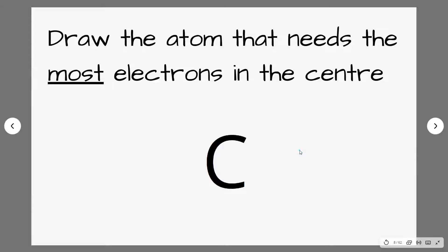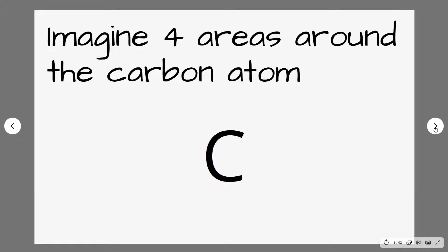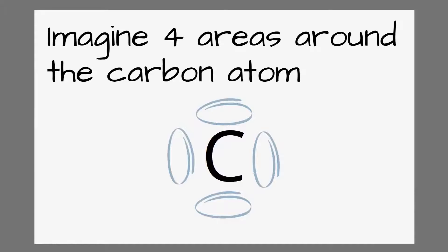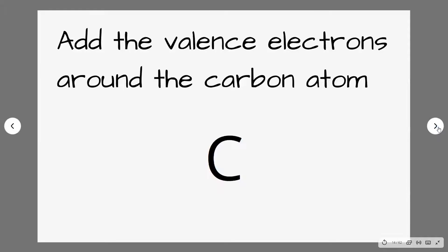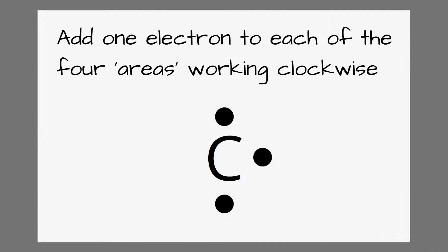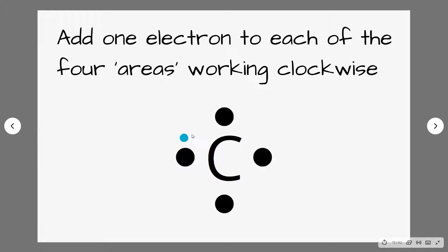In the center of our Lewis diagram we draw the atom that needs the most electrons to become stable — that was carbon, which needed four. Before we place the valence electrons around carbon it helps to imagine four areas around that central atom, so I've drawn those four areas for you now. We start by placing one electron in each area, always working clockwise around the central atom. If carbon had more than four valence electrons we could keep going and pairing them up, but in this case carbon just has four so we leave it as is.